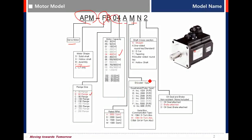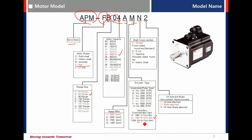M is encoder type 19-bit multi-turn absolute. 04 is multi-turn absolute 18-bit. N is shaft shape, N is straight type.